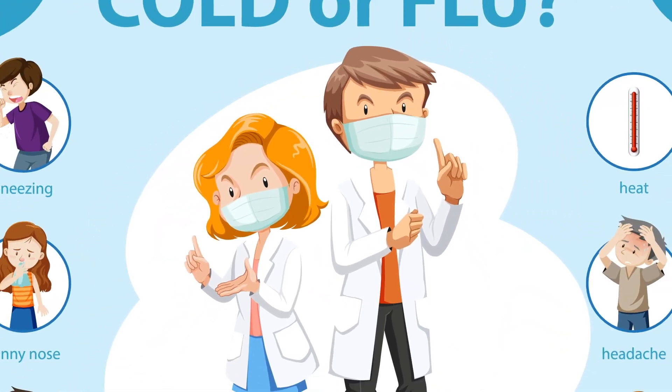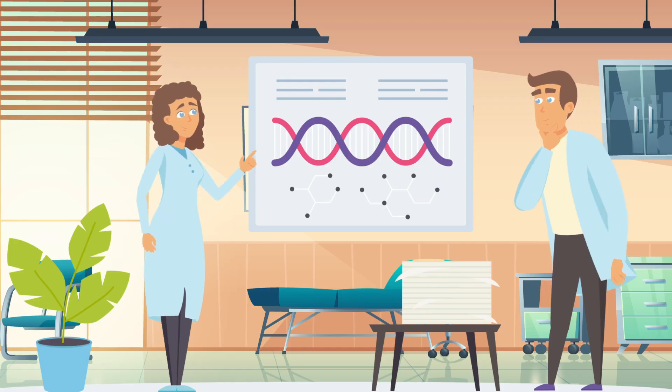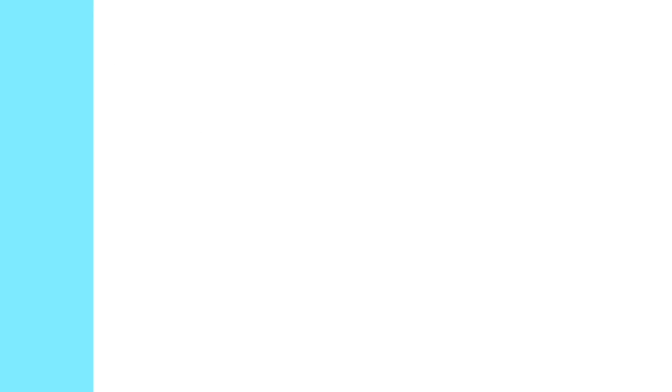We know that the common cold is much more prevalent than the flu. So the initial probability that the patient has common cold is higher than the probability that they have the flu. We can represent this mathematically using the formula P cold is greater than P flu.